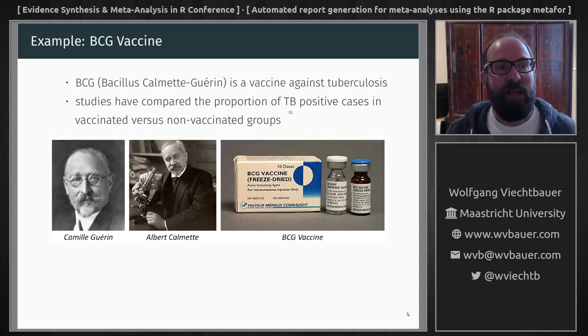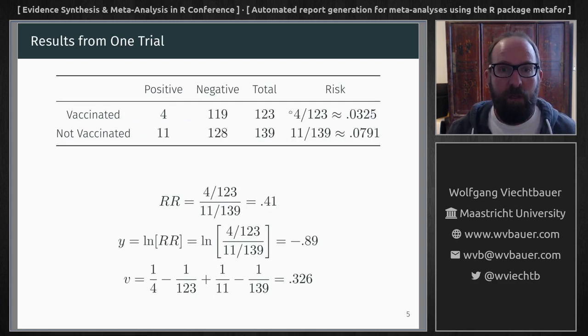So let me give you an example. BCG is a vaccine against tuberculosis and if you want to find out if this vaccine is really effective, you can do a study where you vaccinate one group of individuals and not another group and then you check for the infection risk in the two groups. So here are the results from one of these studies.